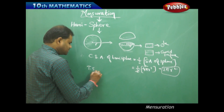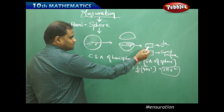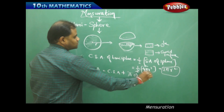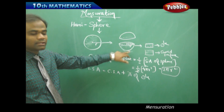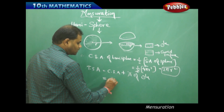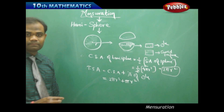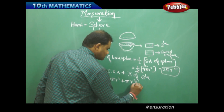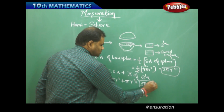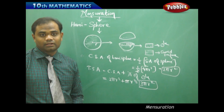When finding the total surface area of a hemisphere, we take the CSA plus the circular base on top, giving two regions: the curved surface and the circle. This gives 2πr² plus the area of the circle, which is πr². Adding these together, the total surface area of a hemisphere is 3πr².